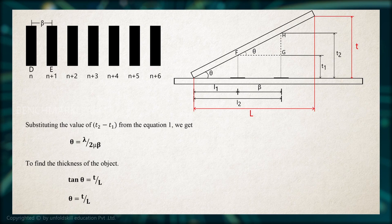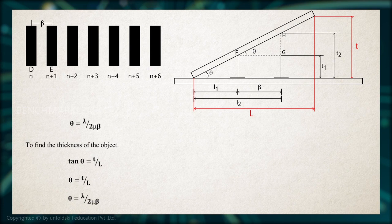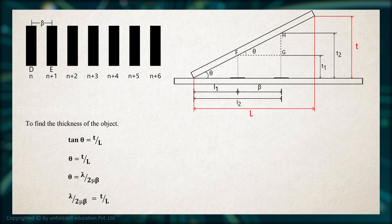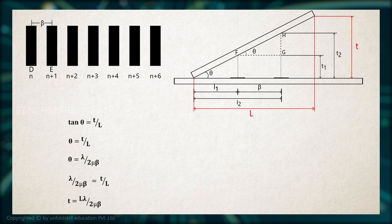So theta is equal to T divided by capital L, but we know that theta equal to lambda by 2 mu beta. Therefore, lambda by 2 mu beta equal to T divided by L, or T the thickness equal to L lambda by 2 mu beta.